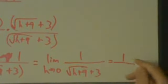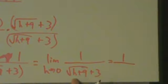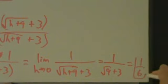It's going to be 1 over, if we do direct substitution, this is 0 plus 9, okay, which is just 9. So we have root 9 plus 3. Square root of 9 is 3. 3 plus 3 is 6. So this is just 1 over 6.